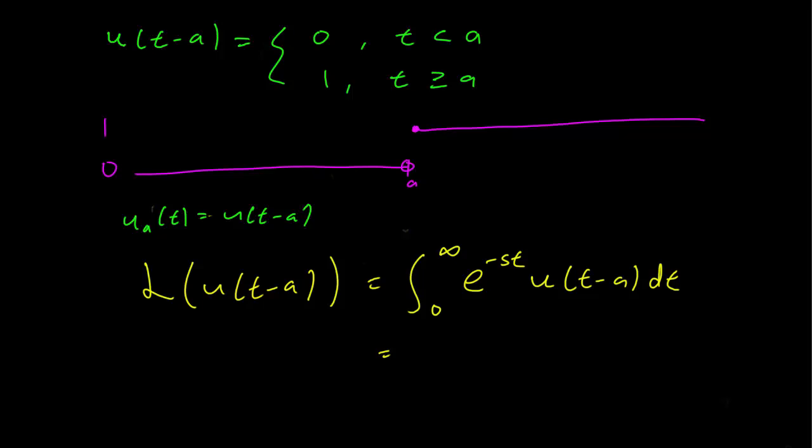So it's clear that as long as a is non-negative and we're going to make that assumption, we can write this as the integral from a to infinity of e^(-st) dt because every time t is less than a the function is just going to be 0.